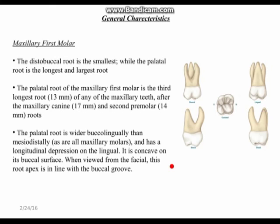The distobuccal root is the smallest. To recap the root characteristics: the palatal root is largest in all dimensions, the mesiobuccal root is wide buccolingually with two canals (MB1 and MB2), and the distobuccal root is the smallest with the smallest canal. The palatal root of the maxillary first molar is the third longest root in the mouth of any maxillary tooth, after the maxillary canine — which is the longest tooth — and the mandibular canine, which has the longest crown.